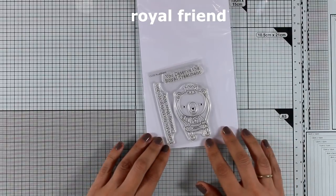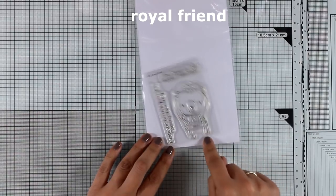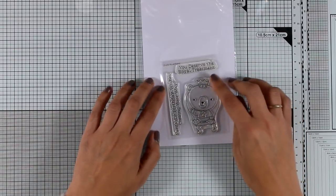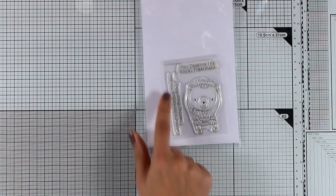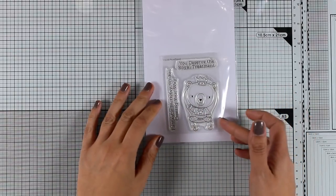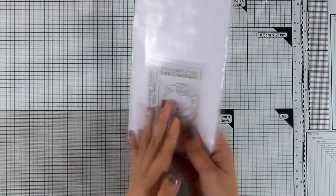Here is an adorable stamp set called Royal Friend and you get this adorable little bear on his throne with a crown and lovely sentiments to go with it such as you deserve the royal treatment and fantastic birthday wishes coming your way. And there are also matching dies in case you want to pop him up on your cards.